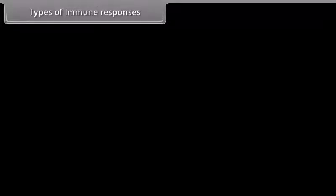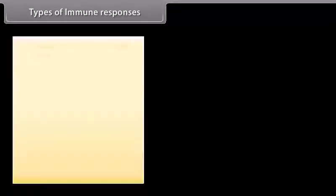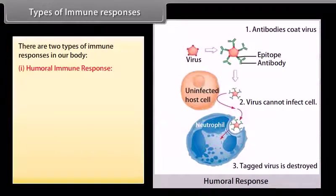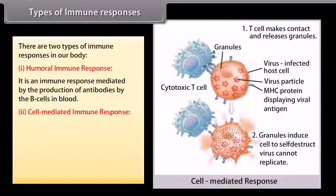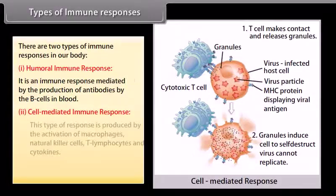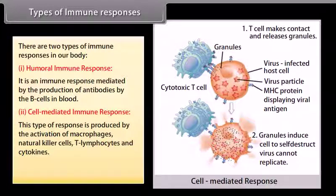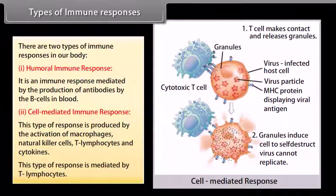There are two types of immune responses in our body. Humoral immune response is an immune response mediated by the production of antibodies by the B-cells in blood. Cell-mediated immune response is produced by the activation of macrophages, natural killer cells, T-lymphocytes, and cytokines, and is mediated by T-lymphocytes.